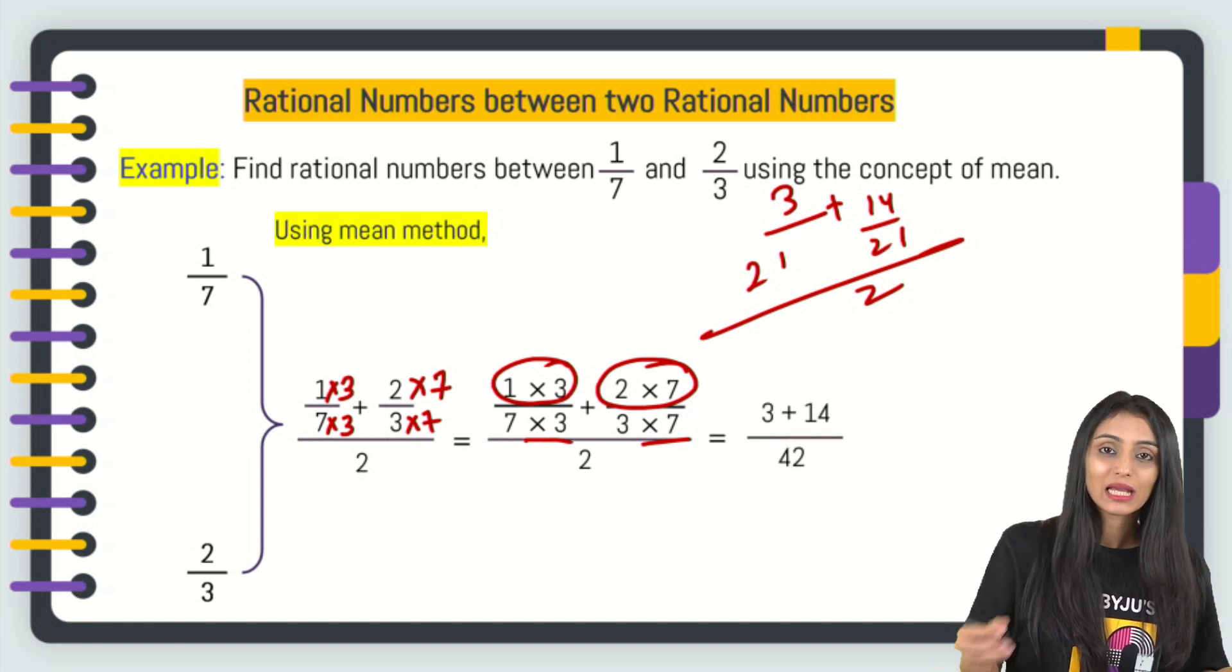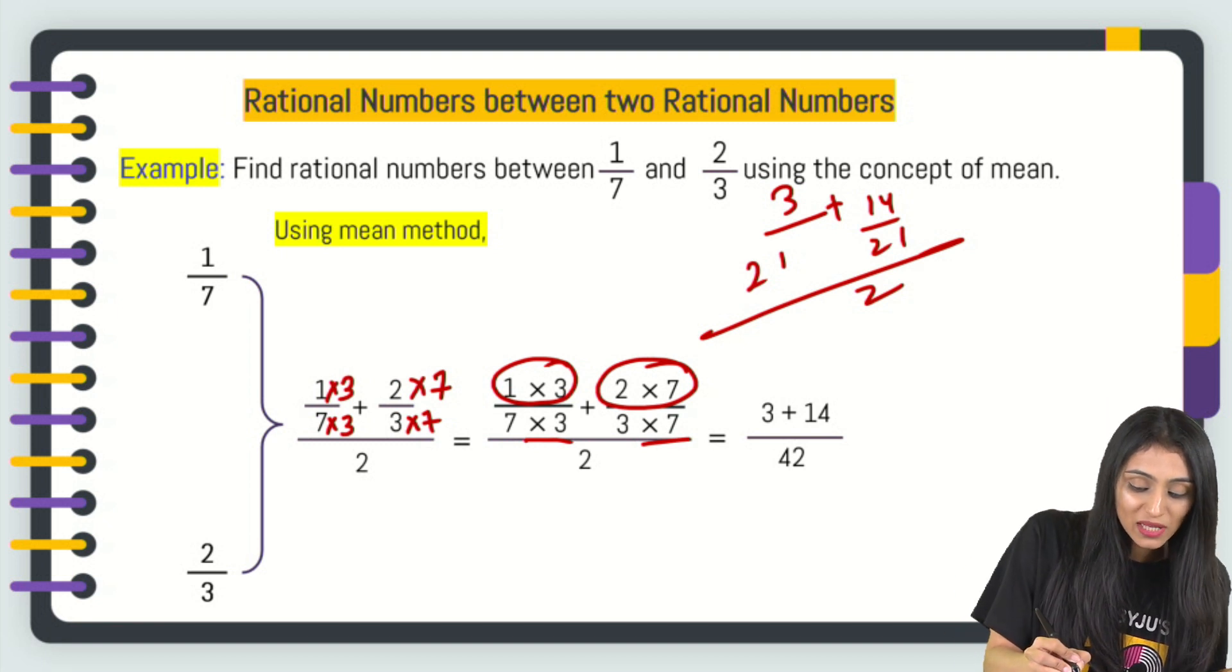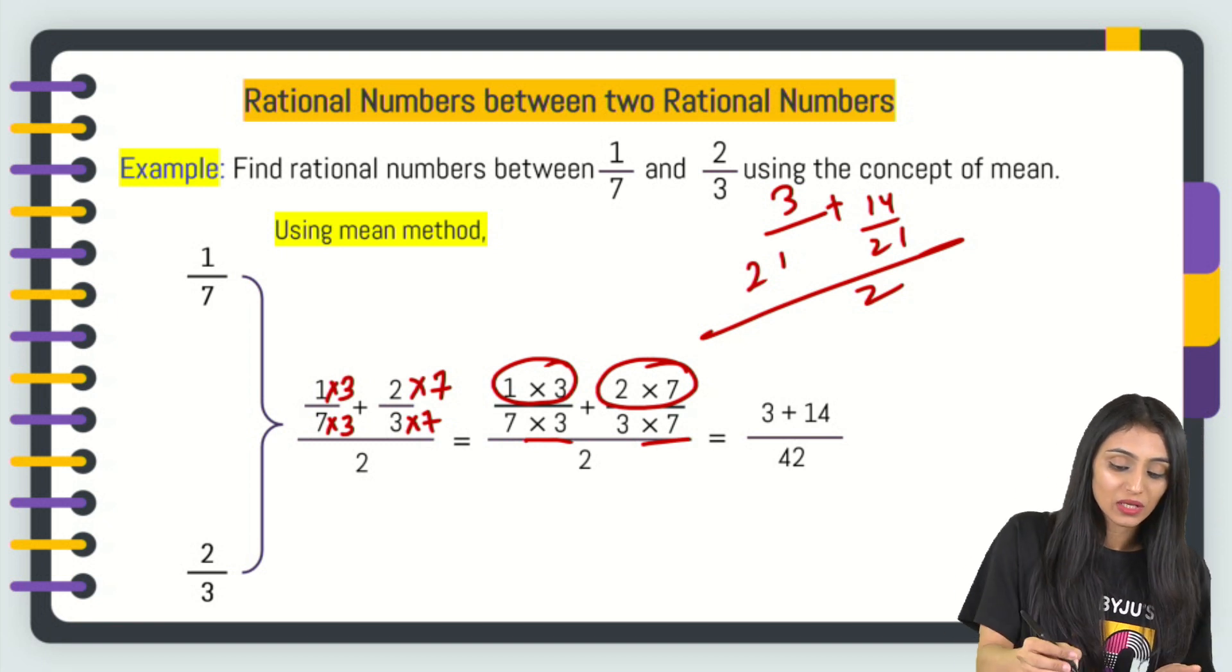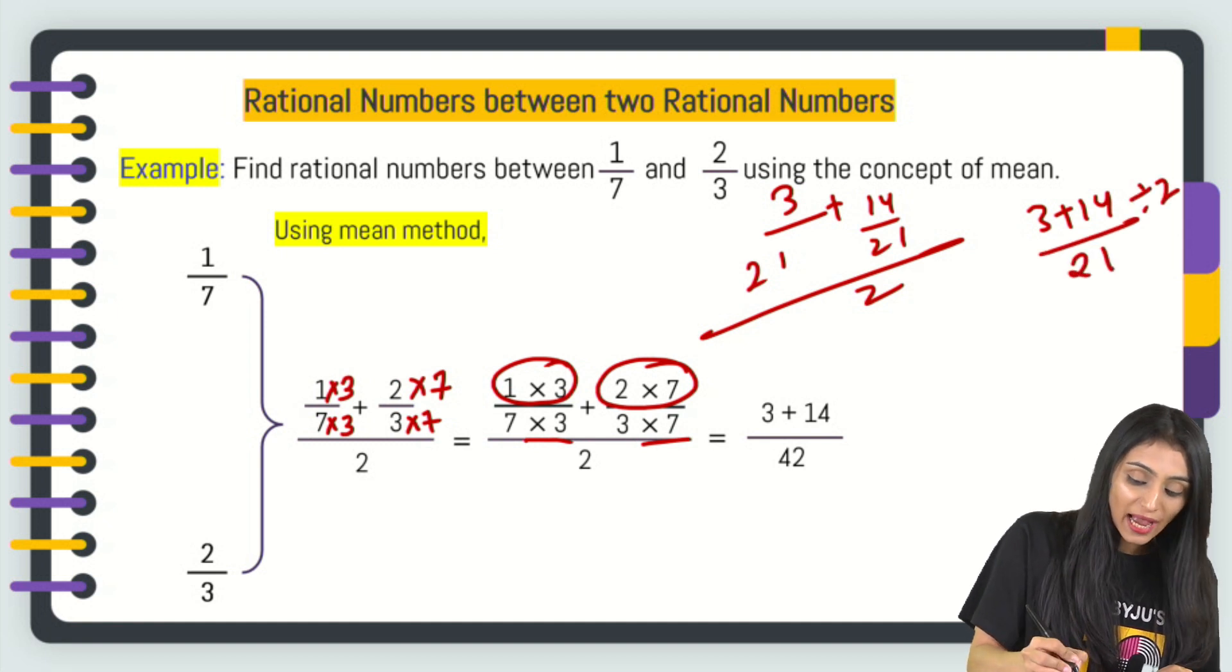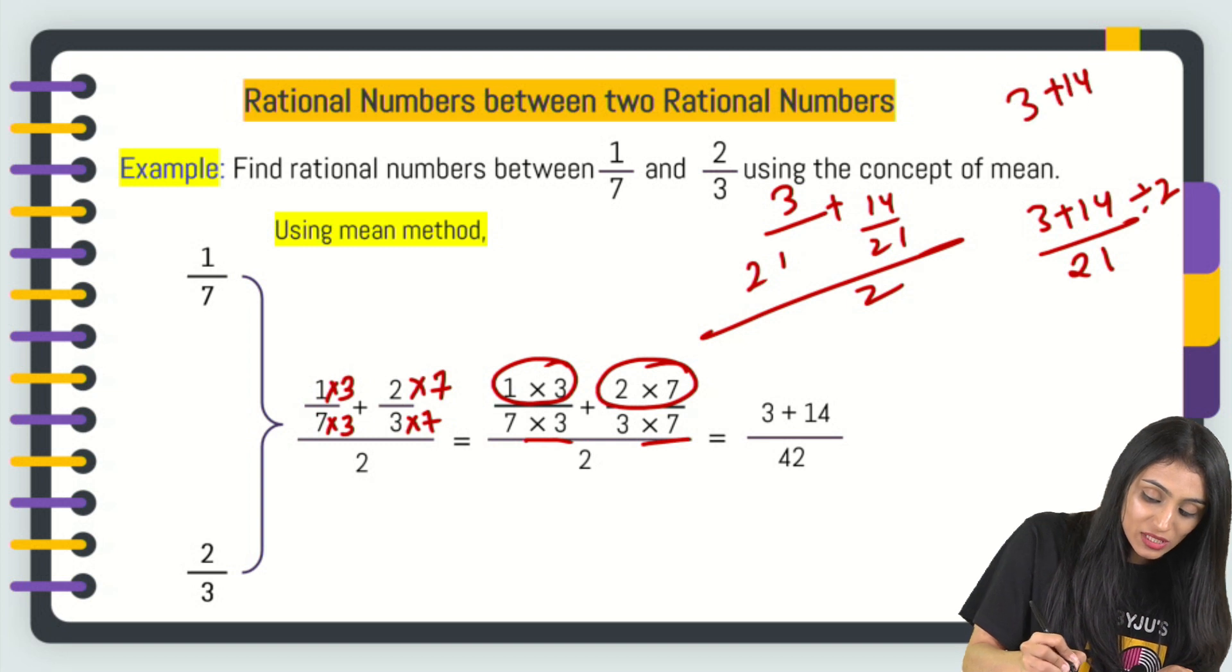How come I'm getting 42? Let me just simplify this. 3 plus 14 in the numerator. This is getting divided. They have a common denominator 21. This is getting divided by 2, and we all know that when we remove the division symbol, we change,